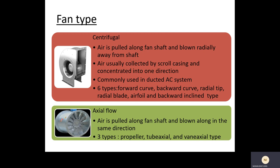The inlet air moves towards the center, is concentrated, and the velocity increases. The air is blown through the centrifugal fan and it is normally used in a ducted AC system. For centrifugal fans, there are six subtypes: forward curve, backward curve, radial tip, radial blade, airfoil, and backward inclined.